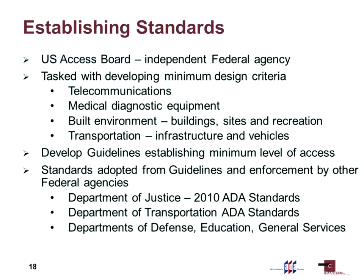So how do we know how to make something accessible? In 1973, with the Rehabilitation Act, Congress established the U.S. Access Board. The Access Board is an independent federal agency made up of representatives from major federal agencies — the Department of Defense, Department of Education, Transportation, Department of Justice, and several others — and it also has public members. They work together to help establish the minimum design criteria for accessibility.